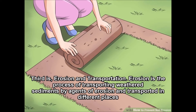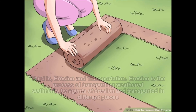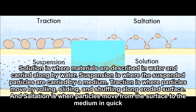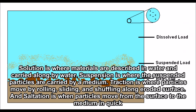Third is erosion and transportation. Erosion is the process of transporting weathered sediments by agents of erosion to different places. There are four distinct ways for materials to be transported: solution, suspension, traction, and saltation. Solution is where materials are dissolved in water and carried along by water. Suspension is where suspended particles are carried by a medium.